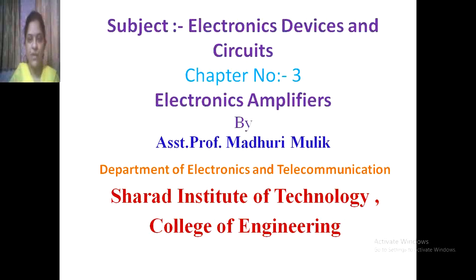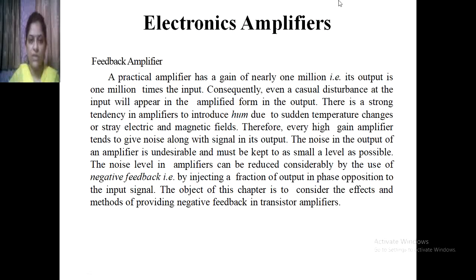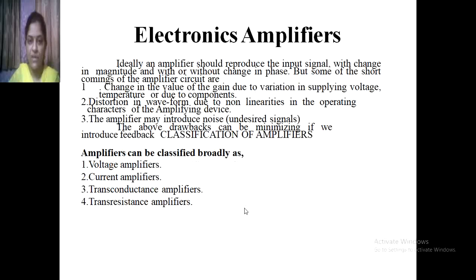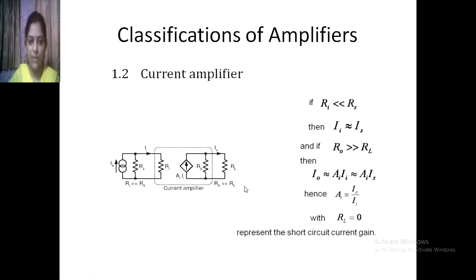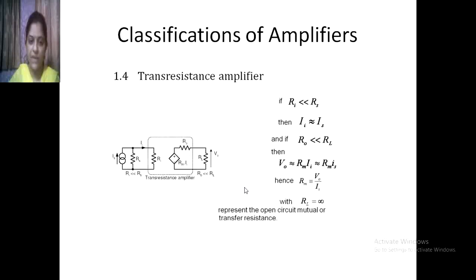Good morning students. In the subject Electronics Devices and Circuits, Chapter 3 - Electronics Amplifiers. Last time we started this chapter and covered two sessions. We have seen what is meant by an amplifier, why there is a requirement of negative feedback, and the types of electronics amplifiers: voltage amplifier, current amplifier, transconductance amplifier, and transresistance amplifier.